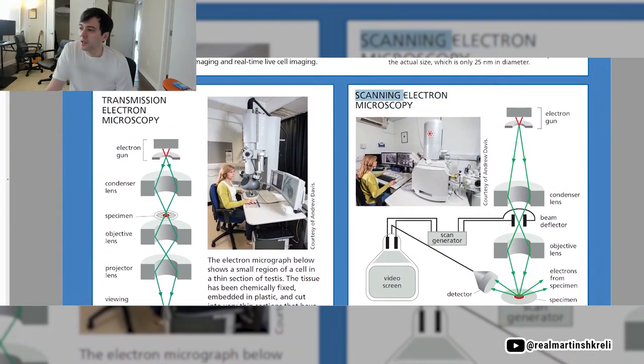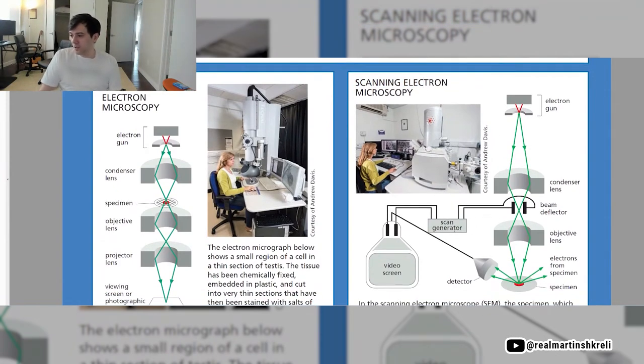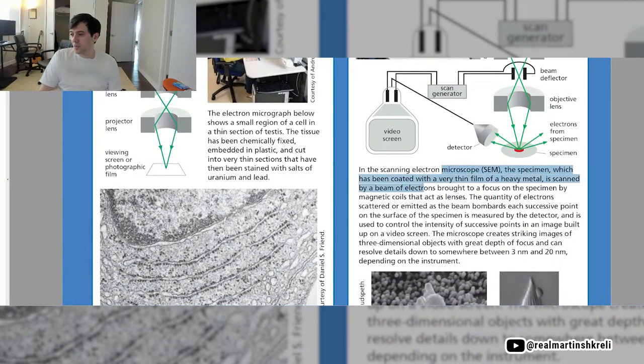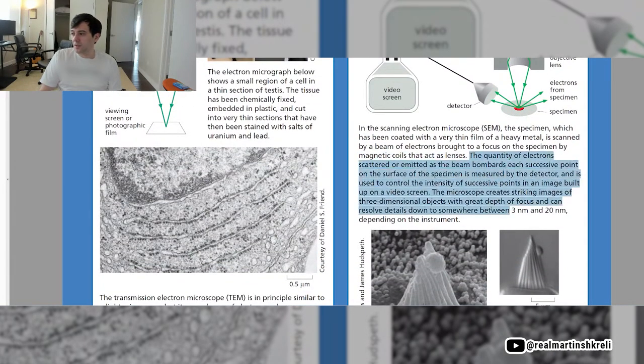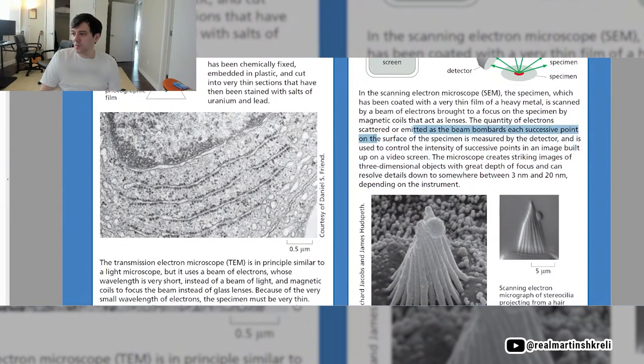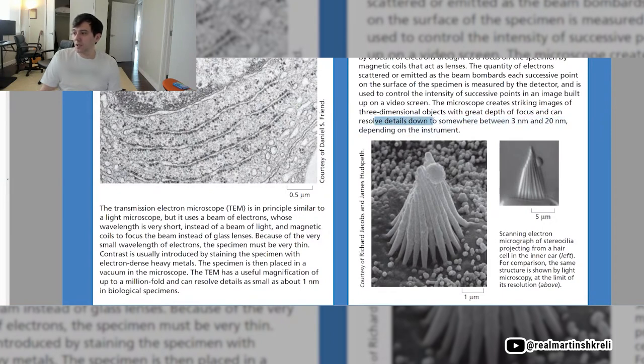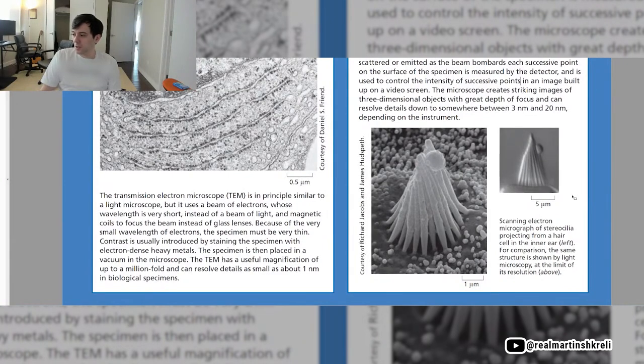This is a SEM, scanning electron microscopy. Similar concept except there's a beam deflector here and electrons from the specimen bounce off and there's a detector that interprets it. In a scanning electron microscope, the specimen, which has been coated with a very thin film of heavy metal, is scanned by a beam of electrons. The quantity of electrons scattered or emitted as the beam bombards each successive point on the surface is measured by the detector and used to control the intensity of successive points in an image built up on a video screen. The microscope creates striking images of three-dimensional objects with great depth of focus and can resolve details down to 3 to 20 nanometers. You can see here a pretty beautiful SEM image, a micrograph of stereocilia projecting from a hair cell in the inner ear. For comparison, the same structure is shown by light microscopy at the limit of resolution, not very clear there.